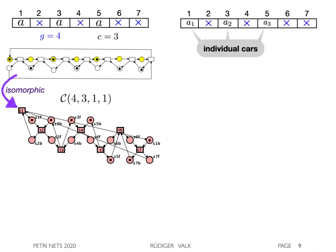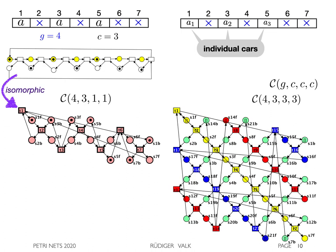Our particular interest lies in circular traffic queues with individual traffic items. Again, we ask what is the behavior equivalent cycloid? The solution is the cycloid G(C,C,C) in general and G(4,3,3) in the example.